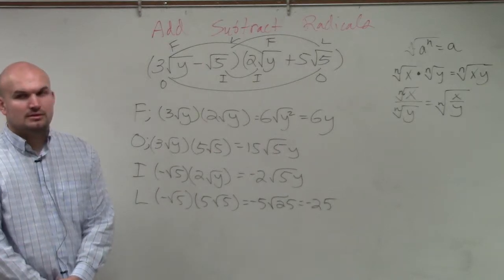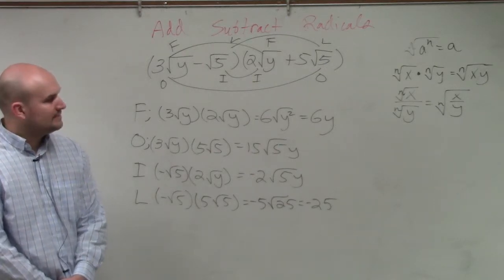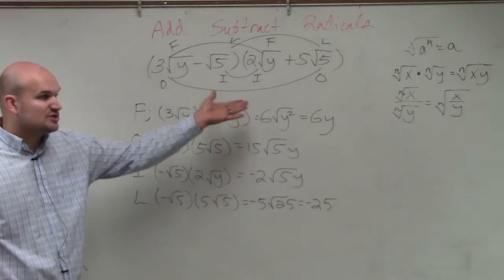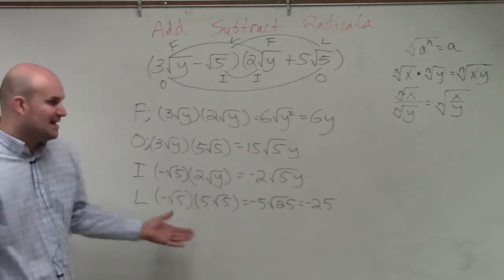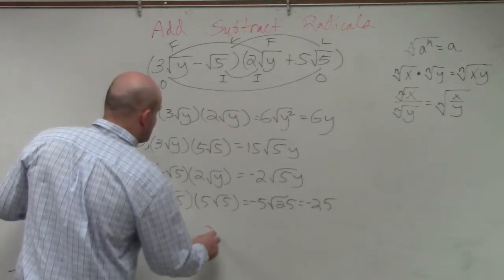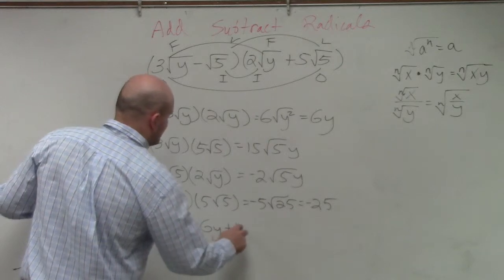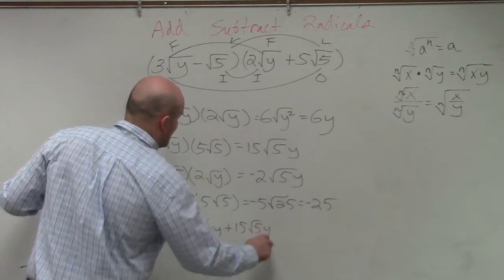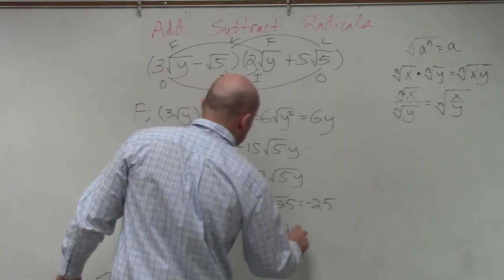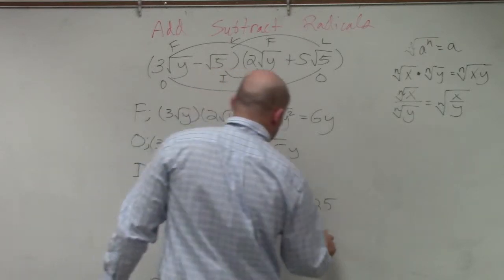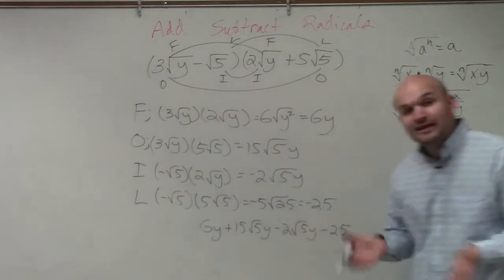Does everybody agree? Yes, no, maybe so. So now all I simply do is just write these all out and then combine them. So I basically have 6y plus 15 times square root of 5y minus 2 times square root of 5y minus 25.